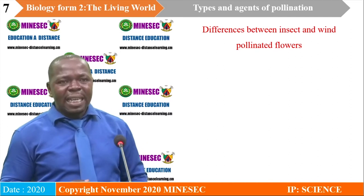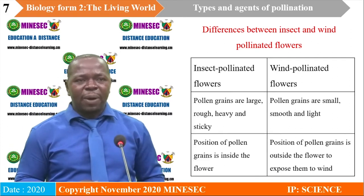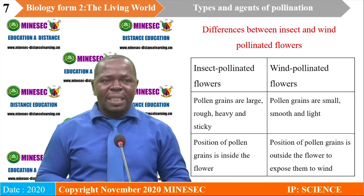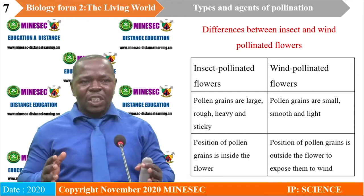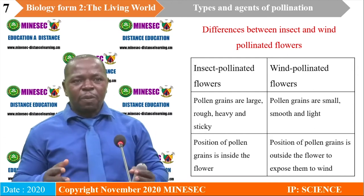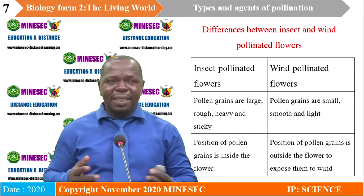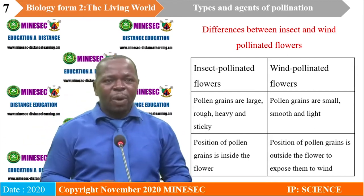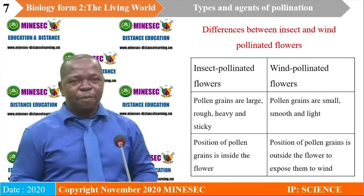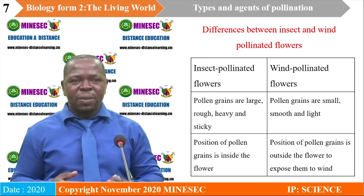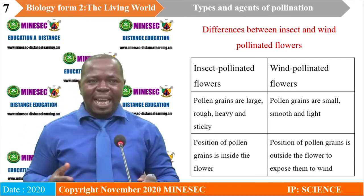No nectar is produced in wind-pollinated flowers. In insect-pollinated flowers, the pollen grains are large, rough, heavy and sticky, while in wind-pollinated flowers, pollen grains are small, smooth and light.